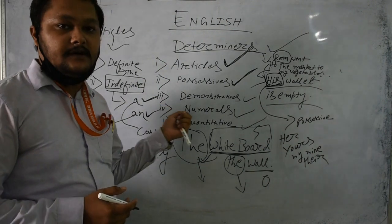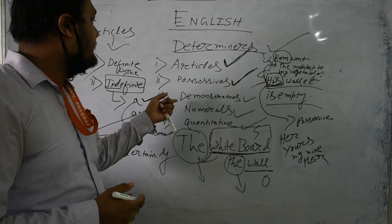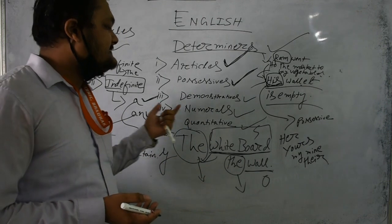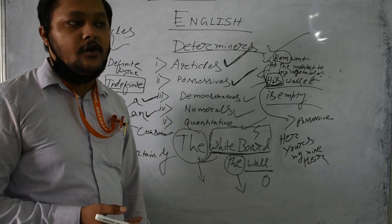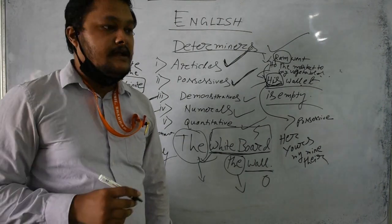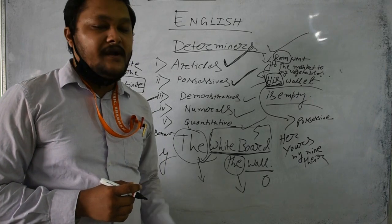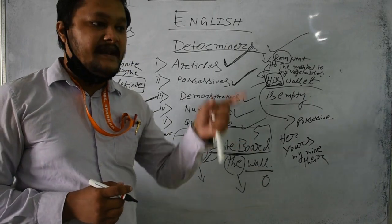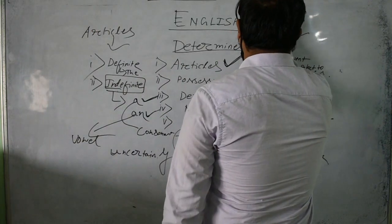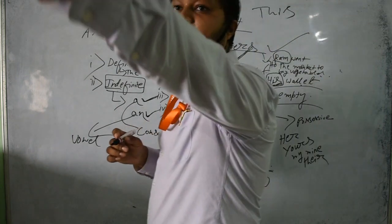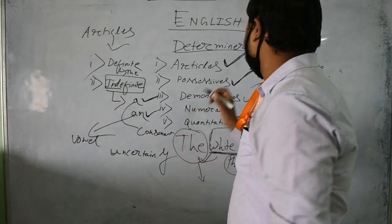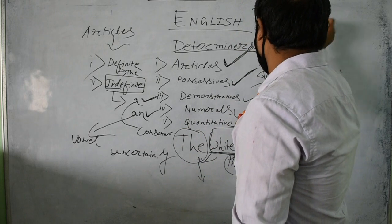The third kind of determiner is called demonstrative. Demonstrative is the easiest kind of determiner because it demonstrates a particular object or noun. When I say 'this table' or 'that chair,' I am indicating the noun by pointing a finger at it. When I say 'this table,' the table is near me, so the demonstrative 'this' is used. When I say 'that chair,' it is far away or not near me, so I use 'that.'